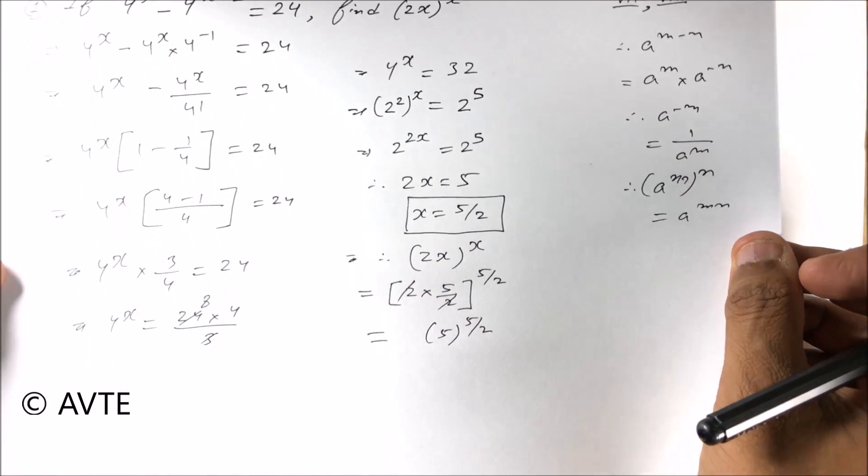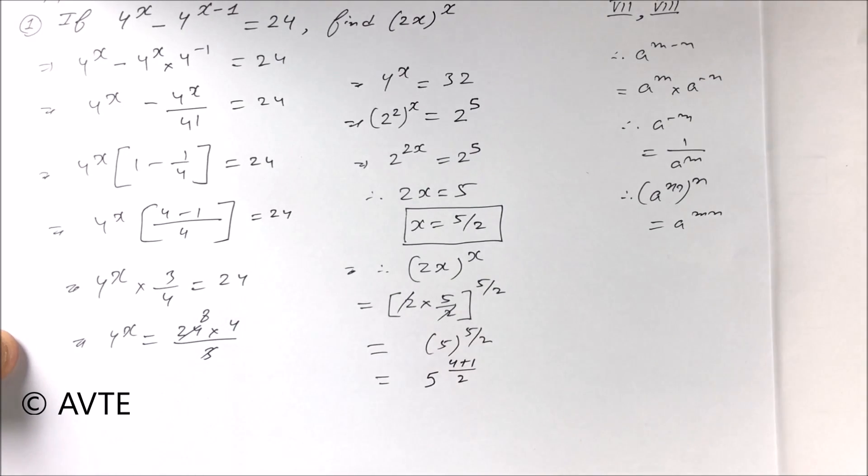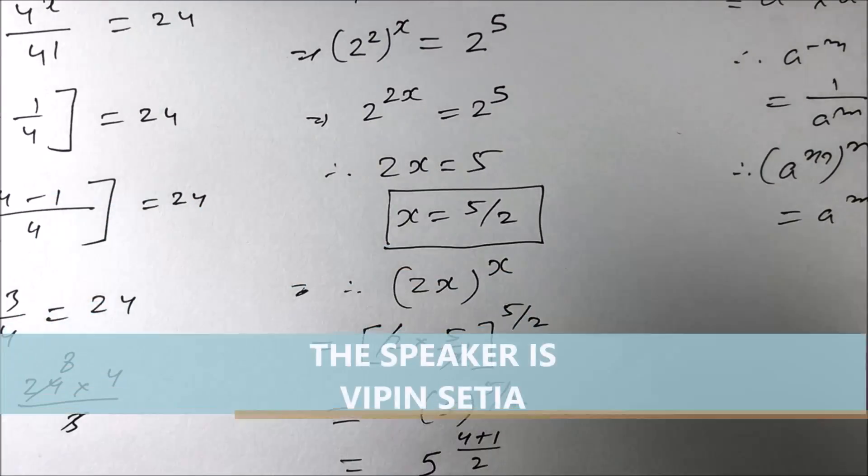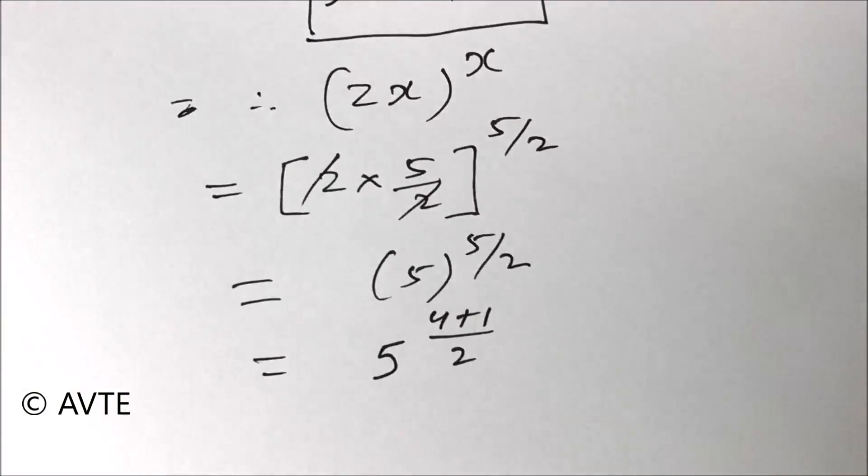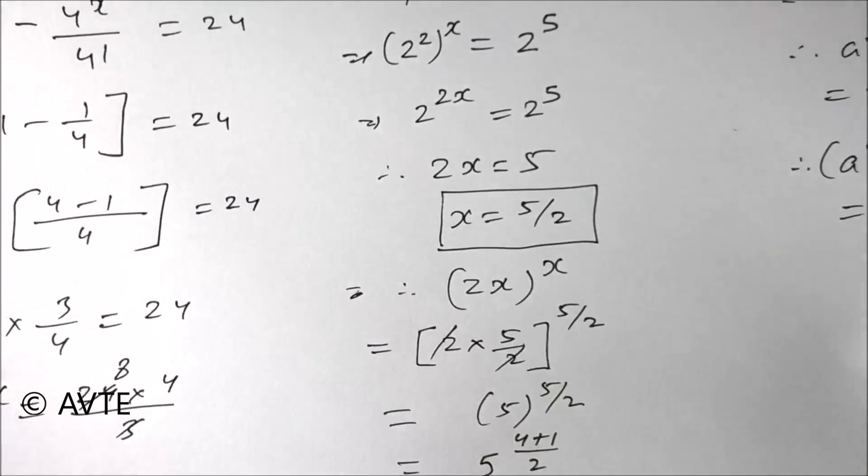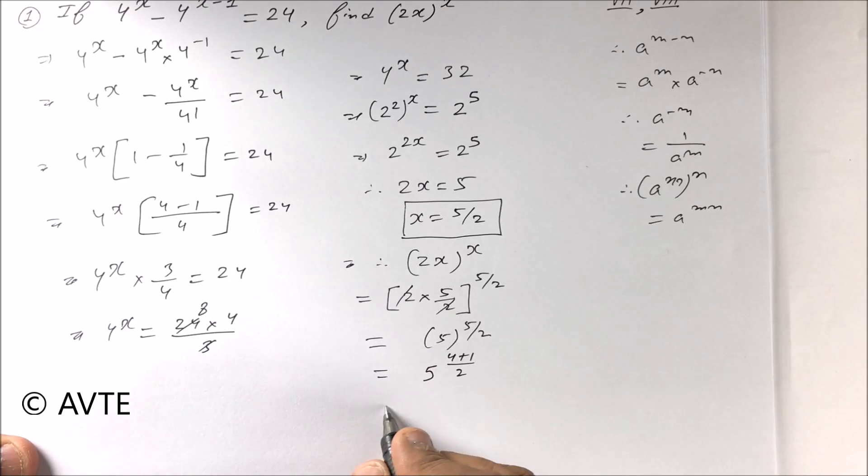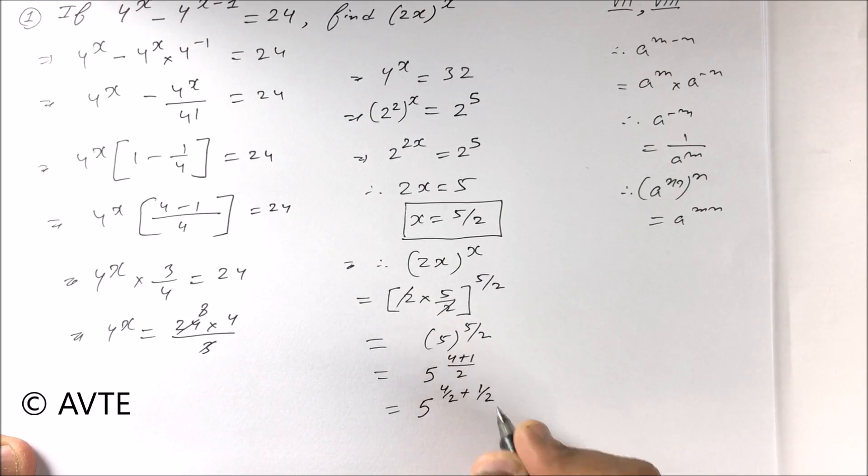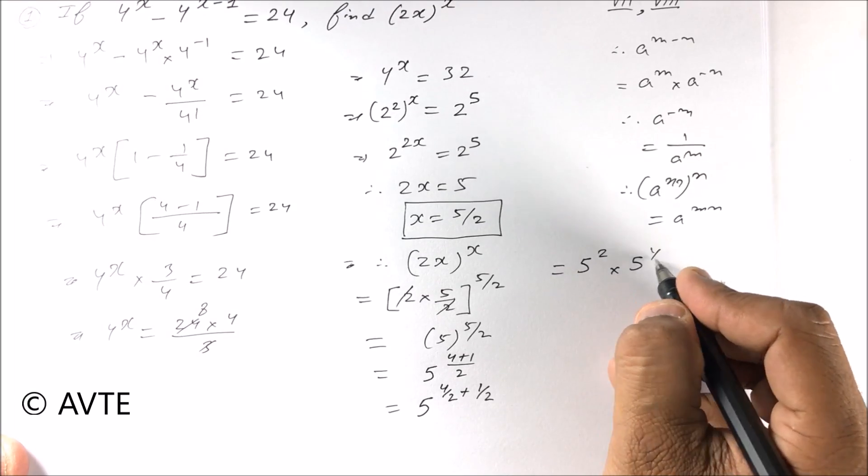So what we do in this case I'll show you. We can write it as 5 raised to power 4 plus 1 upon 2. Whenever your numerator is bigger, you can break your numerator into parts. This is 5 raised to power 4 upon 2 plus 1 by 2, which equals 5 raised to power 2 times 5 raised to power 1 by 2.